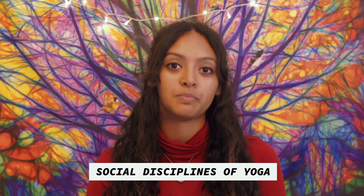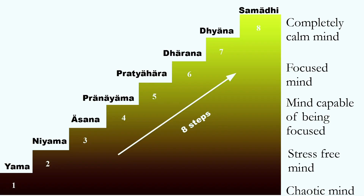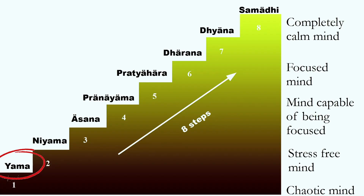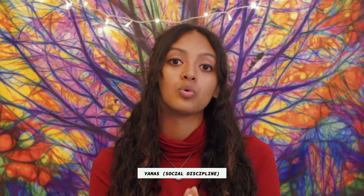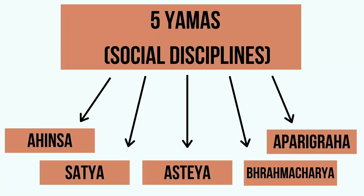Hi, my name is Anvita Dixit and today we are going to be talking about the social disciplines explained in the theory of yoga. In last week's video we understood that yoga is not just asanas and pranayama and that it has 8 different specific steps. Having understood that, it makes the most sense to start with step number 1 — the social discipline, known as Yamas in Sanskrit. There are 5 different types of social discipline that yoga encourages you to adopt.